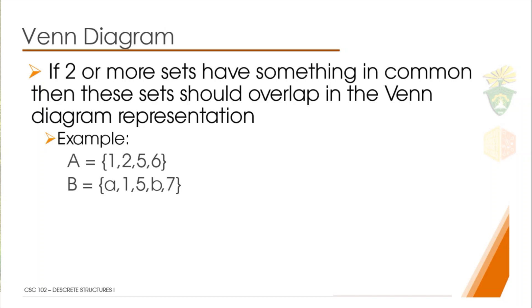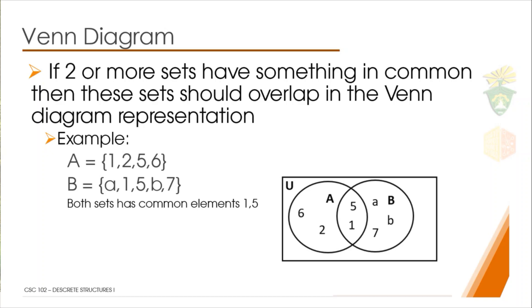We see that from these two sets we have common elements among them, which is the 1 and the 5. If we draw them in a Venn diagram form, it will look like this. The two sets overlapped, and in the overlap we see the common elements from the two sets: we have 5 and 1.